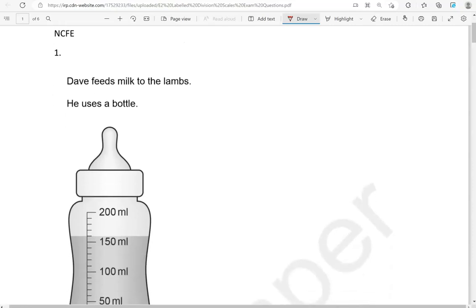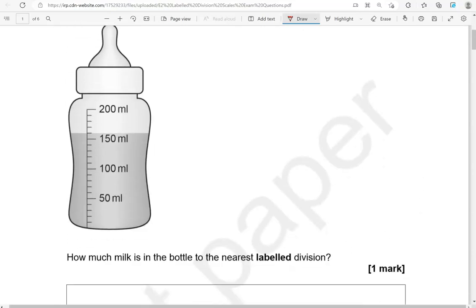Here is the first one. Dave feeds milk to the lambs. He uses a bottle. How much milk is in the bottle to the nearest labeled division?